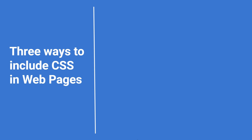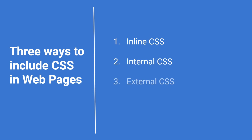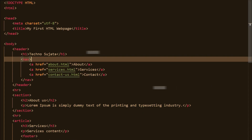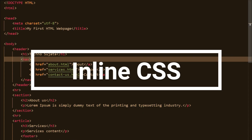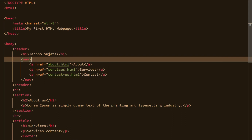Let's explore different ways to include CSS in web pages. There are three ways we can include CSS in HTML: first is inline CSS, second is internal CSS, and third is external CSS.